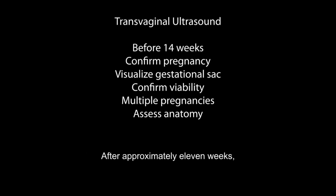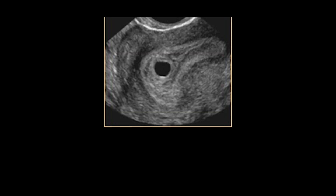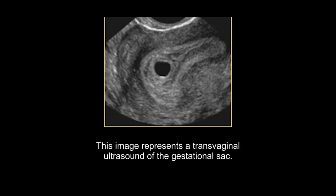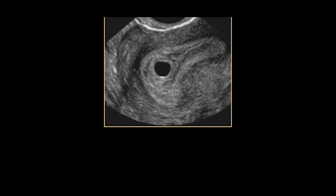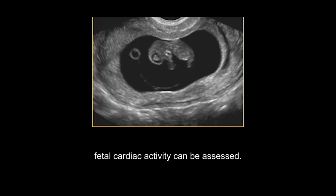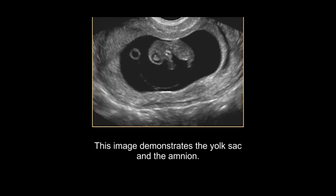After approximately 11 weeks, basic anatomy can be assessed. This image represents a transvaginal ultrasound of the gestational sac. In the first trimester, fetal cardiac activity can be assessed. This image demonstrates the yolk sac and the amnion.